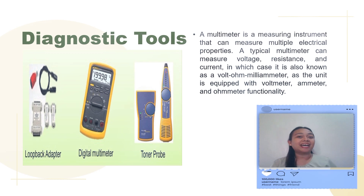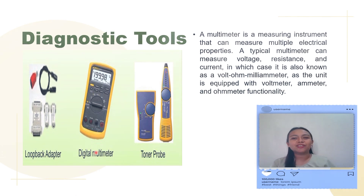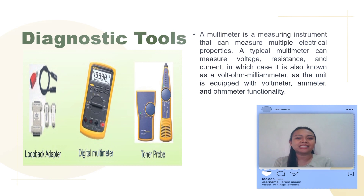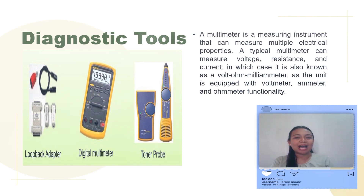How about the diagnostic tools? Let's begin with the multimeter. A multimeter is a measuring instrument that can measure multiple electrical properties. A typical multimeter can measure voltage, resistance, and current — it is also known as a volt-ohm-millimeter, as the unit is equipped with voltmeter, ammeter, and ohmmeter functionality.